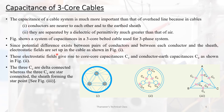These electrostatic fields give rise to core-to-core capacitance Cc, and core-to-earth capacitance Ce. The three core-to-core capacitances Cc are delta connected, and the core-to-earth capacitances Ce are star connected.